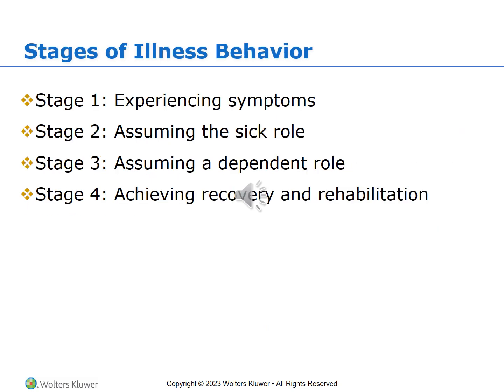Stages of illness and behavior are covered on pages 58 and 59. There are four stages of illness behavior: Stage 1, experiencing symptoms; Stage 2, assuming the sick role; Stage 3, assuming the dependent role; and Stage 4, achieving recovery and rehabilitation.